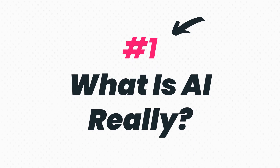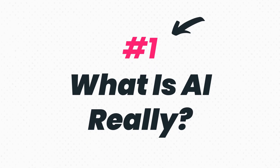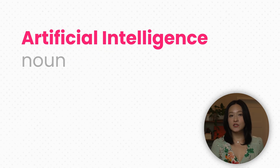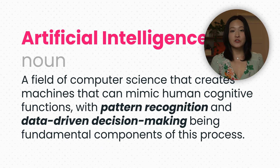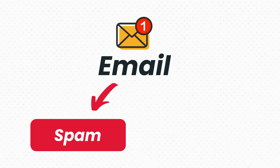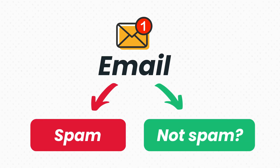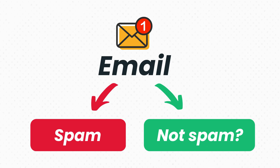Let's start with the most basic question: what actually is AI? At its core, AI is about pattern recognition — teaching computers to make decisions based on data. Think about your email spam filter. It learns patterns from thousands of messages, so when a new one comes in, it decides spam or not spam. That's a broad idea of AI. But when we talk about how it learns those patterns, we get into machine learning.